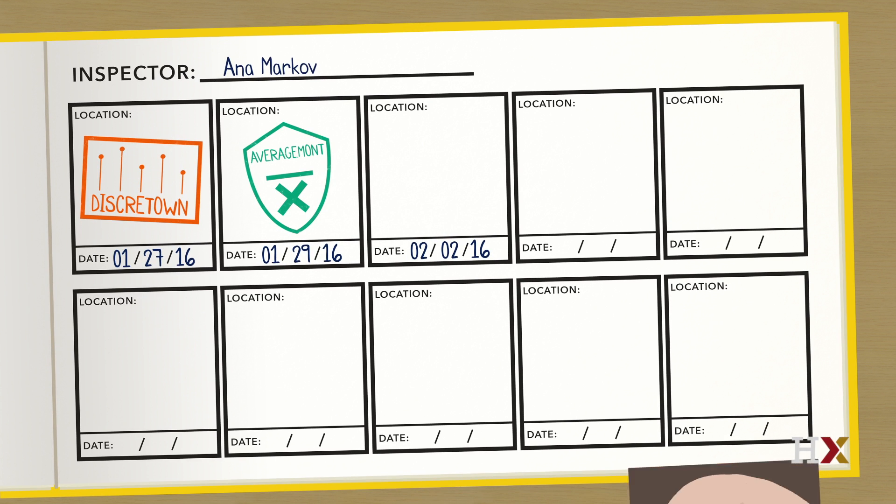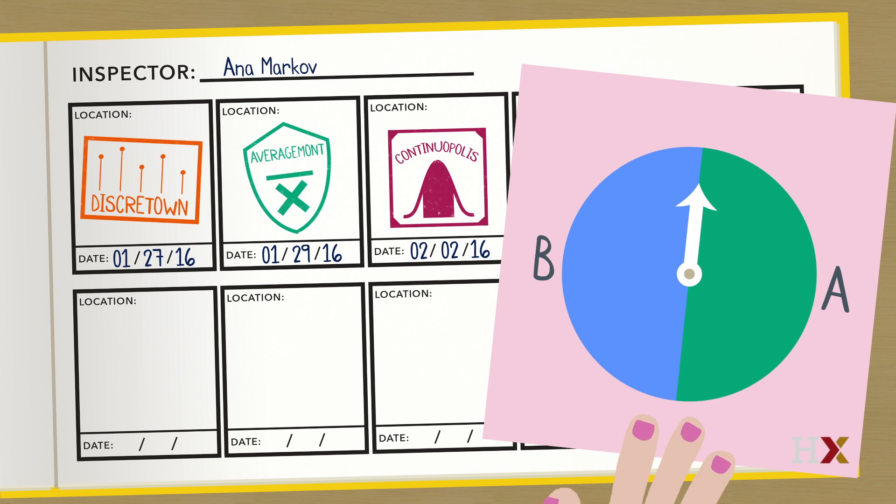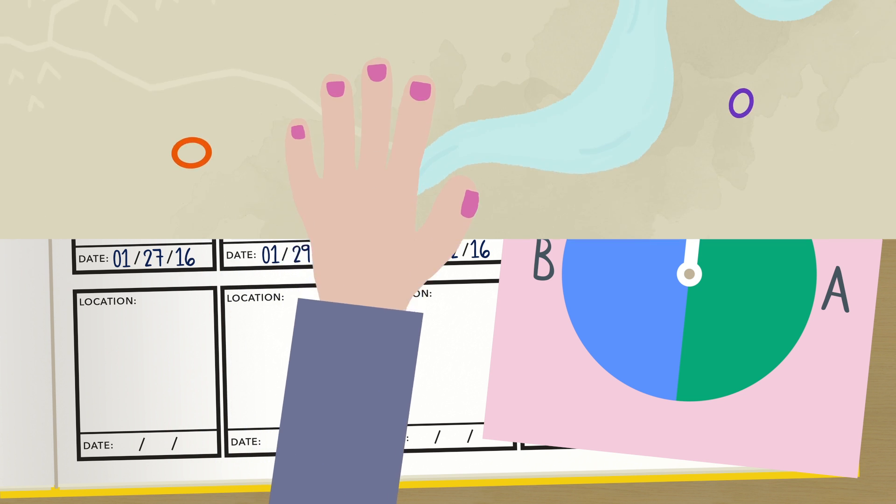Every time she performs an inspection, she stamps her logbook. Then, she selects the next city she will fly to randomly from all available connecting flights with equal probabilities.